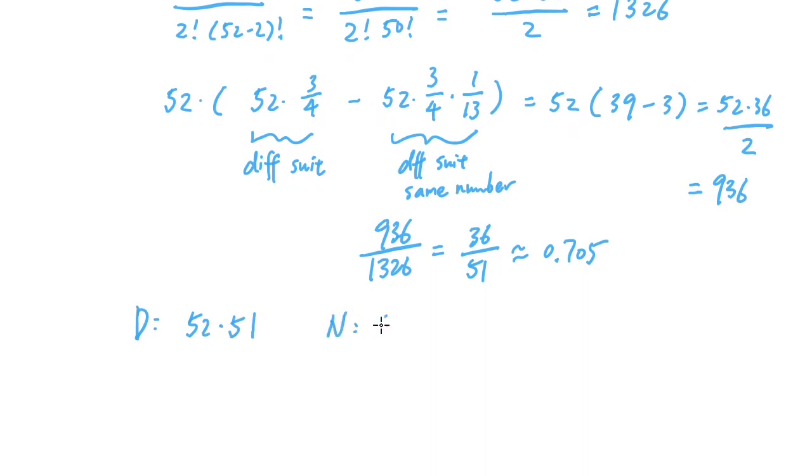then the denominator is really just 52 times 51. The numerator will be 52 times 36. So then that gives you the answer of 52 times 36 divided by 52 times 51, which is also 36 over 51.